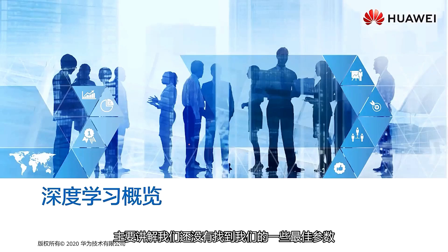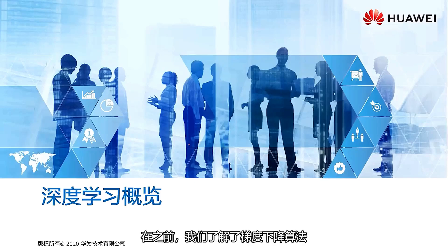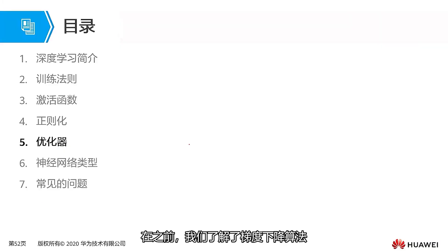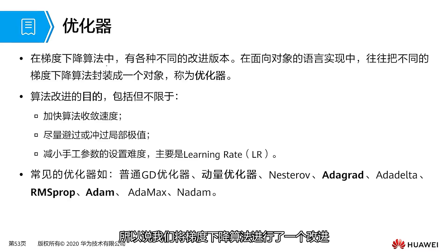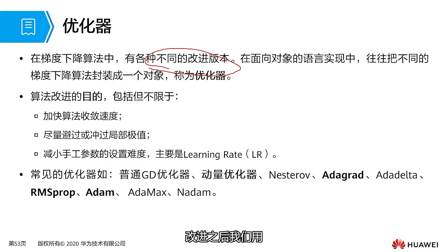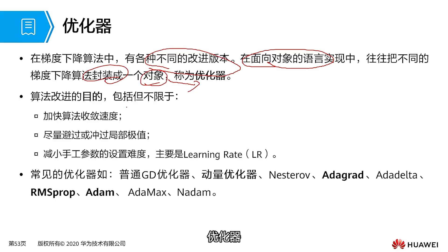In this video, we are mainly going to explain how we have not yet found some of our best parameters and we need to update our parameters in a certain way. Previously we learned about the gradient descent algorithm, which has some drawbacks, therefore we have improved the gradient descent algorithm. After improvement, we encapsulated it into an object using object-oriented language, and this object is called our optimizer.